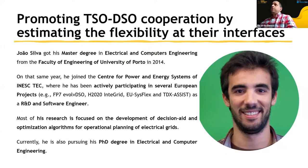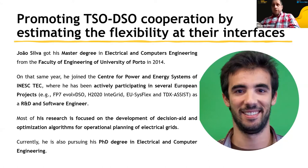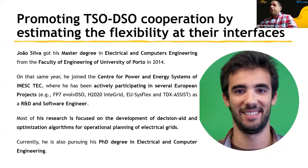João Silva has a master's degree in electrical and computer engineering. He's a researcher at the Center for Power and Energy Systems at IneskTech. He has been working in multiple European projects, where he developed these concepts. He also works on operational planning of distribution grids by exploring optimal power flow algorithms, and is finishing his PhD degree in electrical and computer engineering at the Faculty of Engineering of the University of Porto.